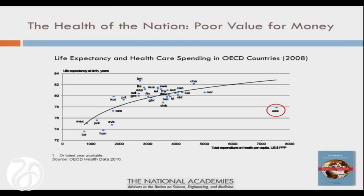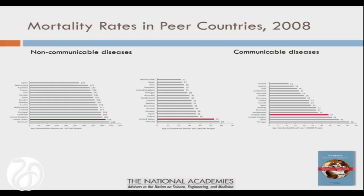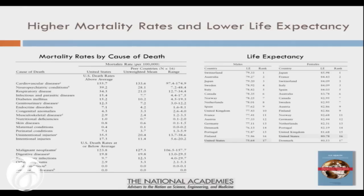What we focused on was the fact that not only is our life expectancy lower than these other countries, but is our health in other dimensions also different? To orient you to these bar charts: the red is the United States. If you divide mortality into three large buckets — non-communicable diseases, communicable diseases, and injuries — you'll see the US ranks at or near the bottom on multiple measures of mortality in comparison to peer countries.